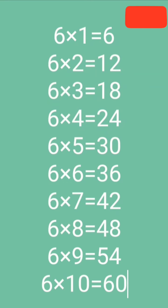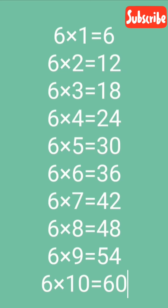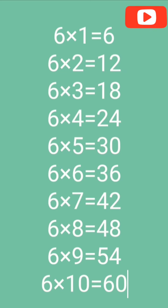6th Table. 6 1's are 6, 6 2's are 12, 6 3's are 18, 6 4's are 24, 6 5's are 30, 6 6's are 36.